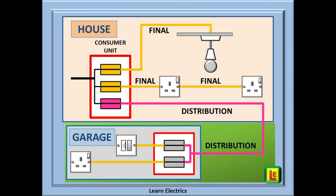Now we can put in the sockets and switches needed in the garage, and because they are the last leg again, they are all final circuits — so let's mark these in orange. We have shown a fused spur here as part of a final circuit. This is correct. Although the fused spur or fused connection unit contains a fuse, it is not considered as a marker between a final and a distribution circuit. Cables going into a fused spur are part of a final circuit.